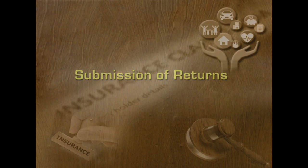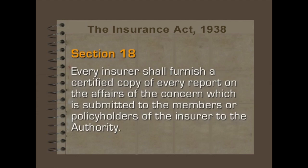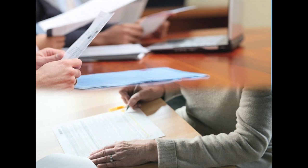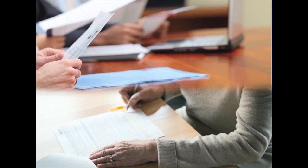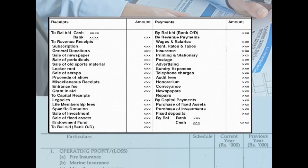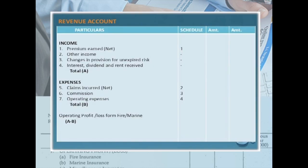According to Section 18 of the Insurance Act 1938, every insurer shall furnish a certified copy of every report on affairs of the concern which is submitted to the members or policyholders of the insurance to the authority. It should submit a certified copy of the abstract and minutes of the proceedings of every general meeting within 30 days from the holding of the meeting. Every insurance company shall submit four copies of printed audited accounts and financial statements including the balance sheet, profit and loss account, account of receipts and payments, and revenue account prepared in accordance with the regulations issued by the authority. It should also submit the actuarial report and abstract statement prepared by the actuaries within six months from the end of the period to which they refer.